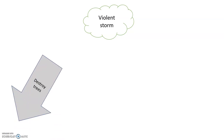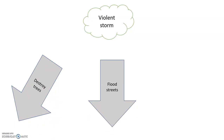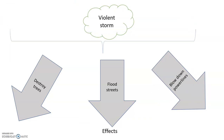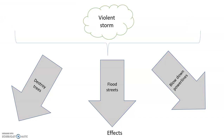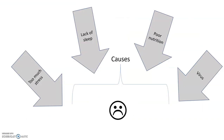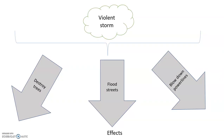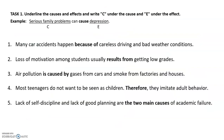For instance, a violent storm may destroy trees, flood streets, and blow down power lines. It may sometimes be hard to distinguish between causes and effects. To determine causes, you may ask the question: why does this happen? To identify effects, you can ask: what happens because of this?